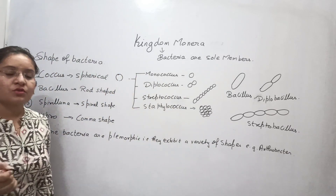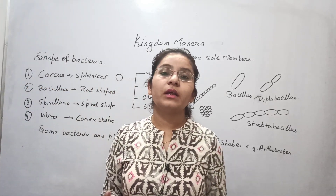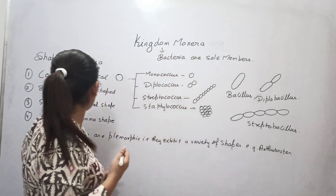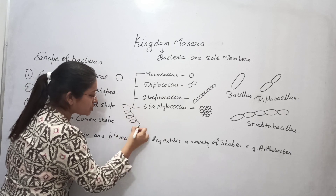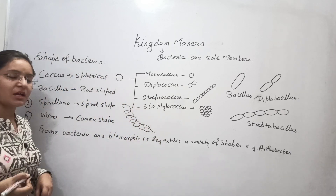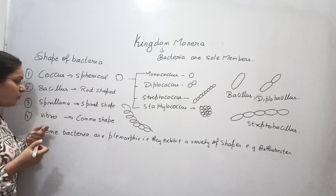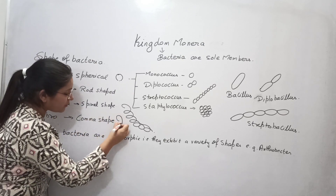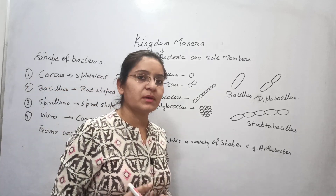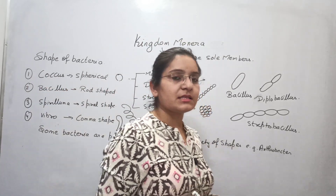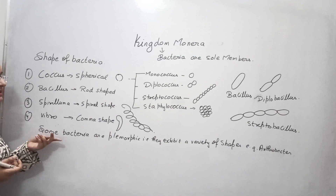The most common example of bacillus bacteria is E. coli, the bacterium found in the human intestine. Then there is spirillum — spirillum means a spring-shaped or spiral-shaped bacterium. Then vibrio — vibrio means a comma-shaped bacterium.